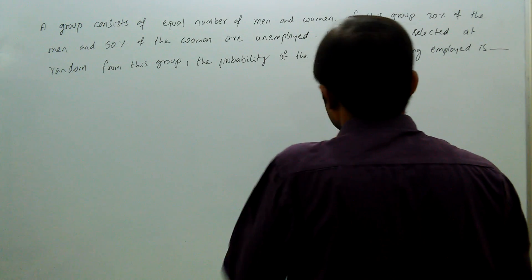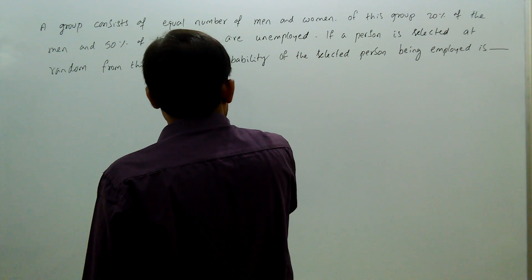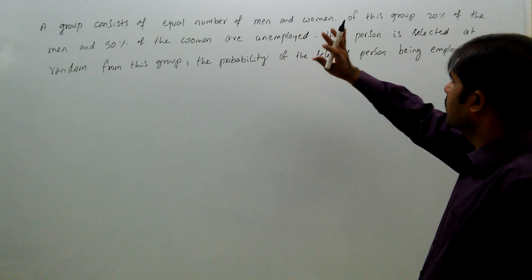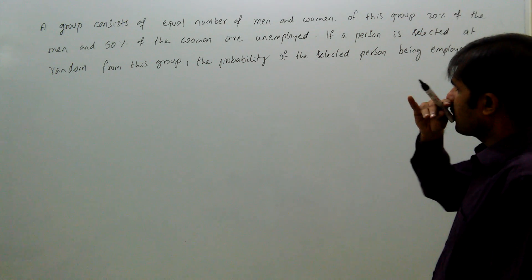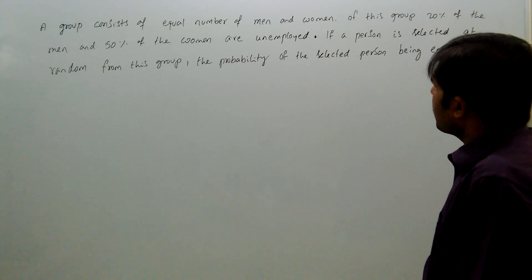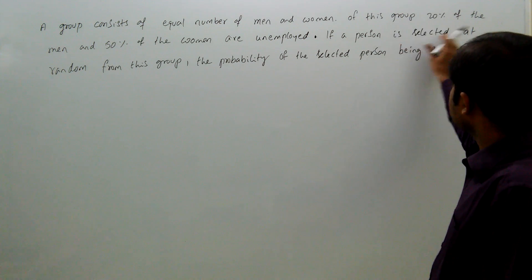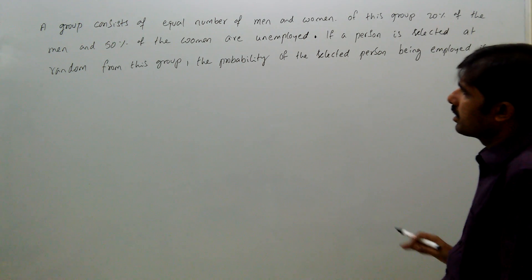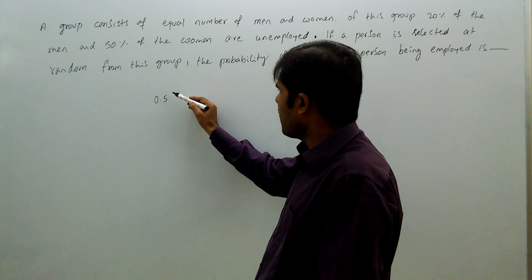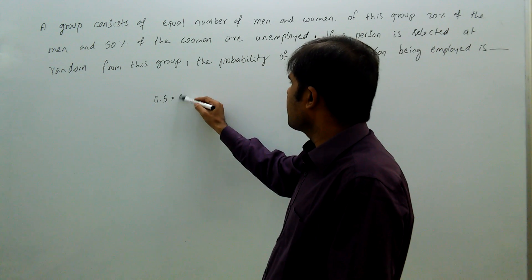See here: men and women are equal in percentage of this group. 20% of men are unemployed, and 50% of women are unemployed. That means employed men are 80% and employed women are 50%. Since 50-50 are there, out of 50% of men, employed are 80%, and out of 50% of women, employed are 50%.